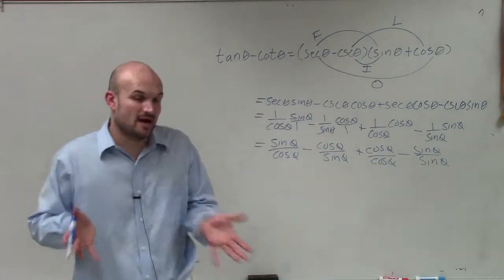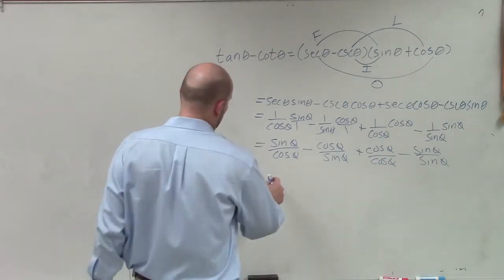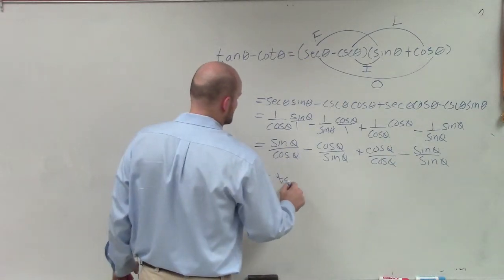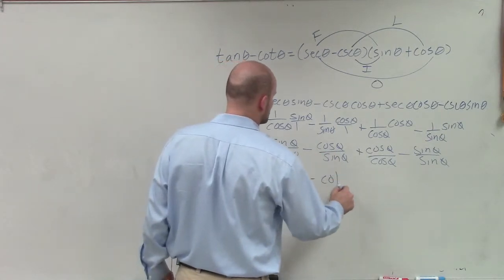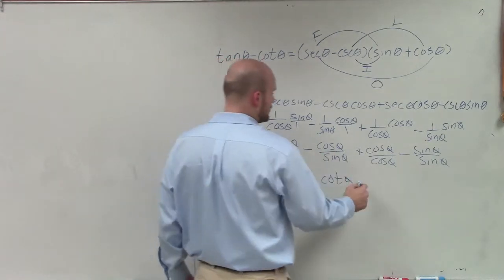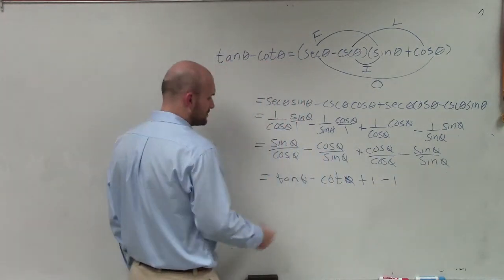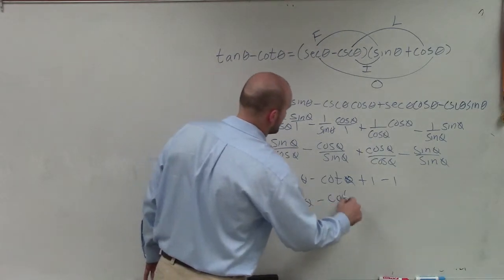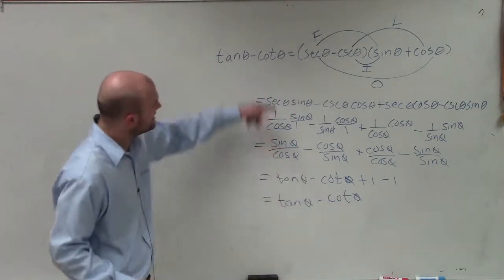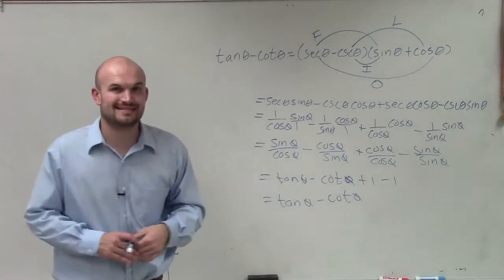So now, we go back and we say, all right, by using my trigonometric identities, how can I simplify this again? Well, sine over cosine is just going to be tangent of theta. Cosine over sine is going to equal cotangent of theta. Cosine over cosine is just going to equal 1 minus 1. Well, 1 minus 1 is equal to 0, so therefore I'm just left with tangent of theta minus cotangent of theta, which you guys can see on my left-hand side is exactly what I'm looking for to verify my identity.